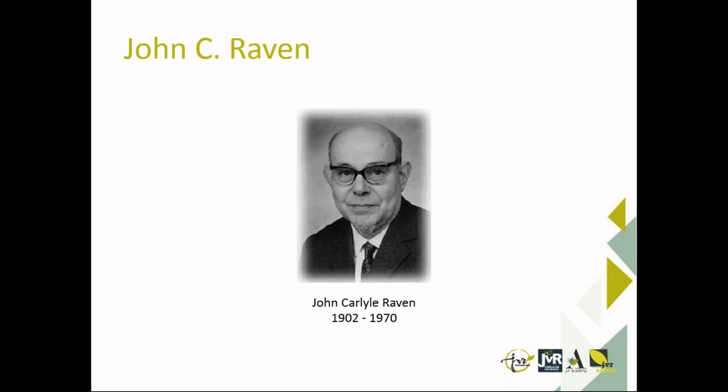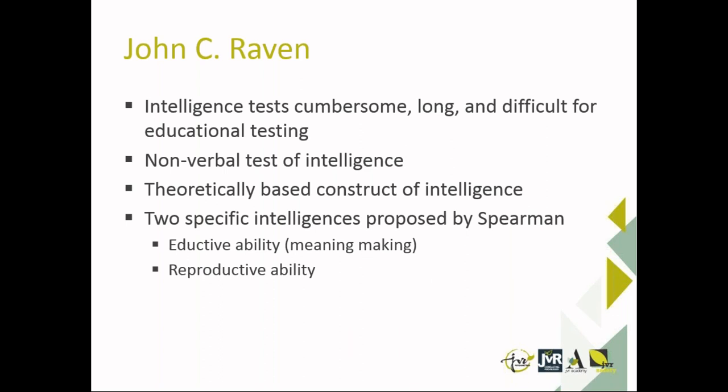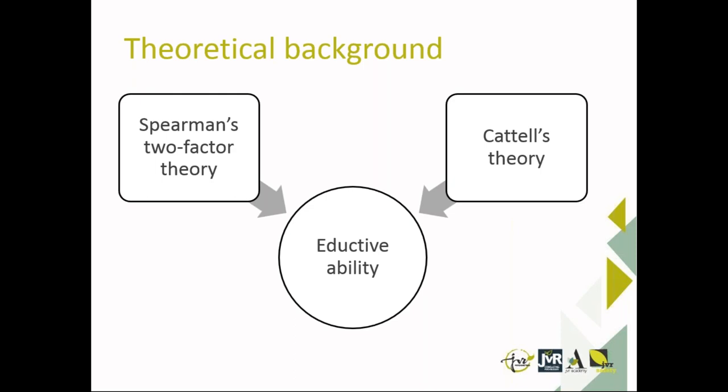The Ravens Progressive Matrices was developed by John C. Raven. Raven found that intelligence tests of his time were cumbersome, long and difficult for the educational testing setting. He wanted to develop a test of intelligence that was non-verbal, and also theoretically based. Raven decided to measure two specific intelligences as proposed by Spearman: inductive ability and reproductive ability.